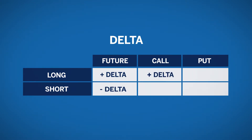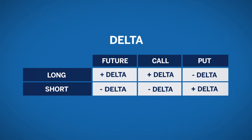Being long a call will result in positive delta. Being short a call results in negative delta. Conversely, being long a put results in negative delta, and being short a put results in positive delta.